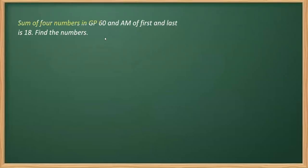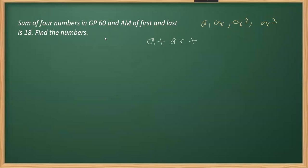In this question, the sum of four numbers in GP is 60, and the arithmetic mean of the first and the last is 18. We have to find these numbers. Numbers in GP can be taken as a, ar, ar², and ar³. Their sum gives us a + ar + ar² + ar³ = 60, which we call equation one.